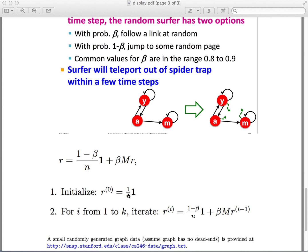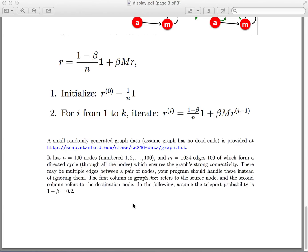We will try to use some data to implement this method. The data contains 100 nodes and there are 1024 edges. There may be multiple edges between a pair of nodes. The first column of the data refers to the source node and the second column refers to the destination node. We will choose beta to be 0.8.